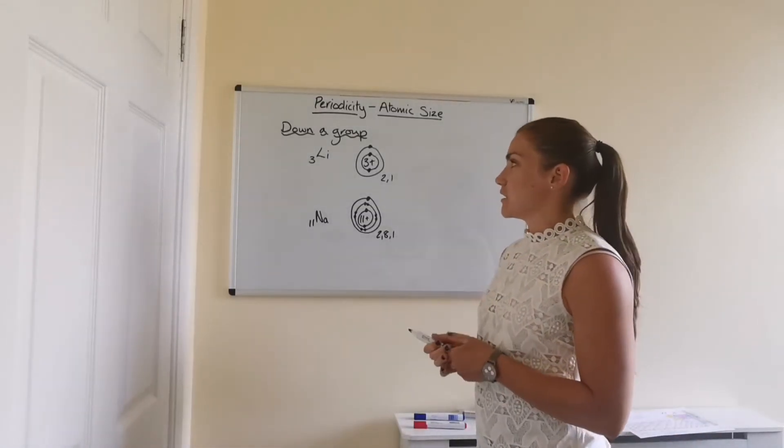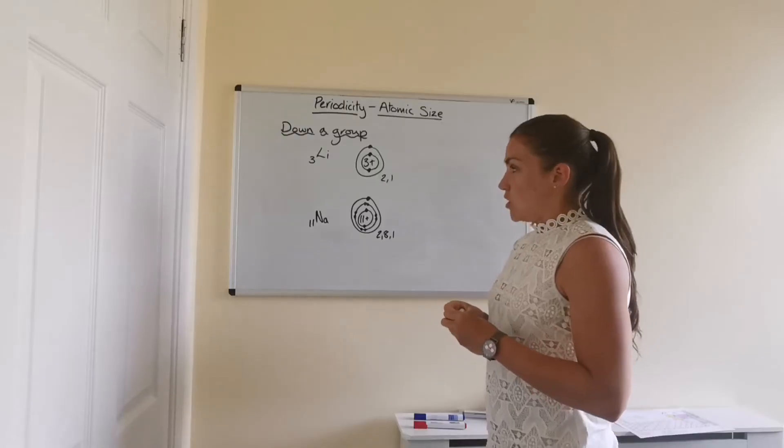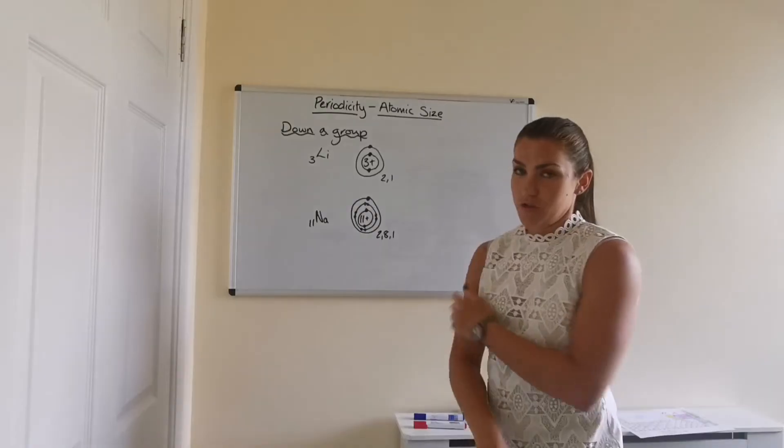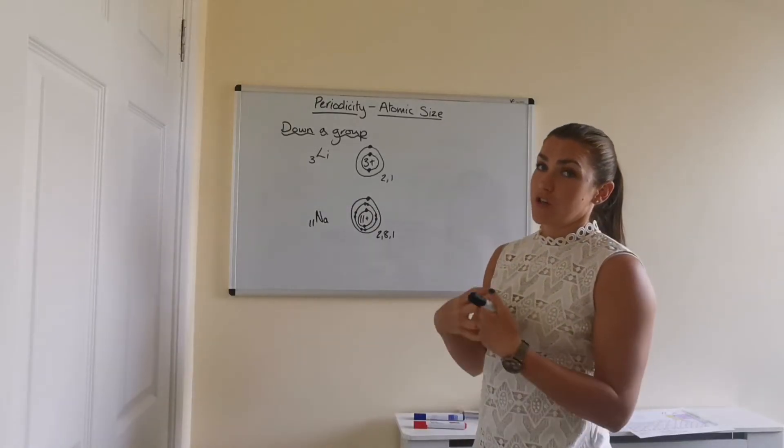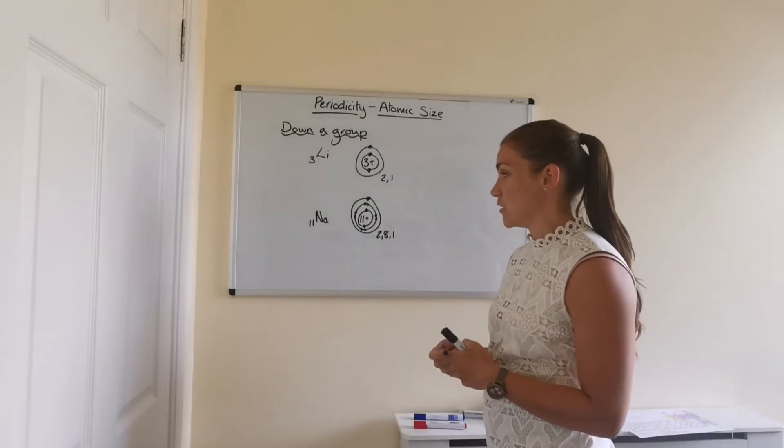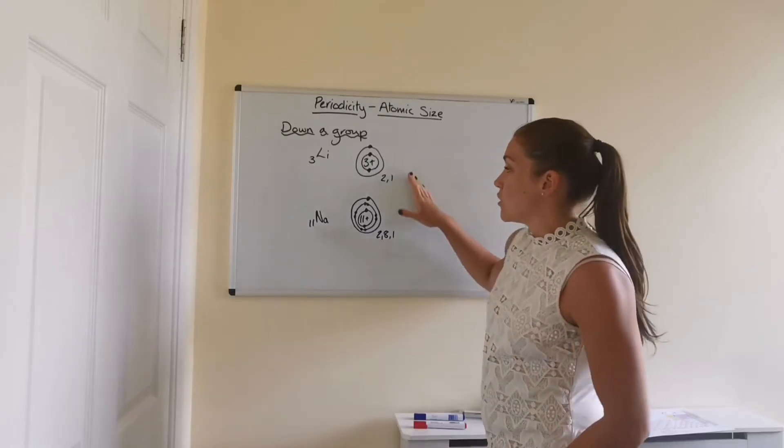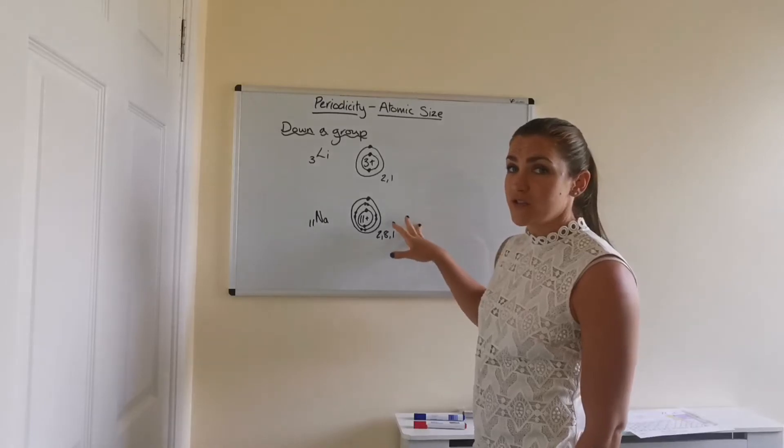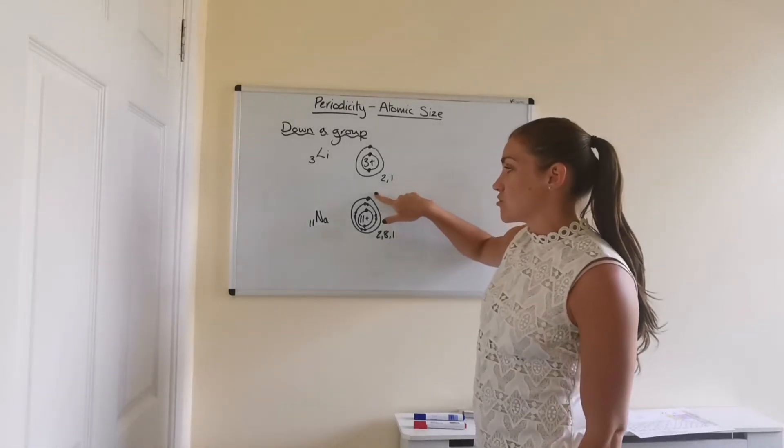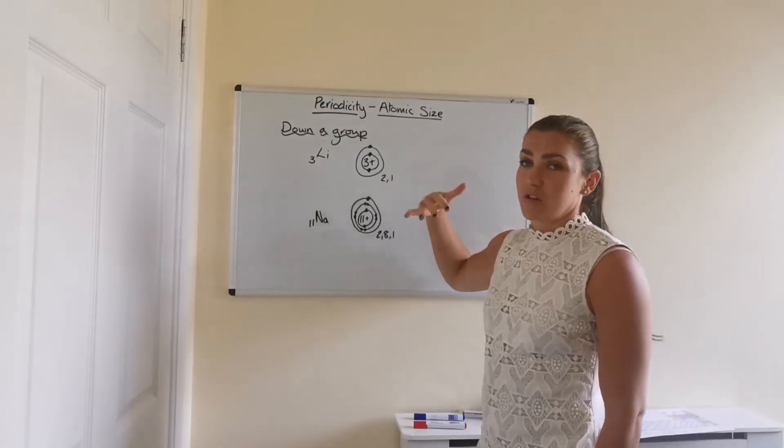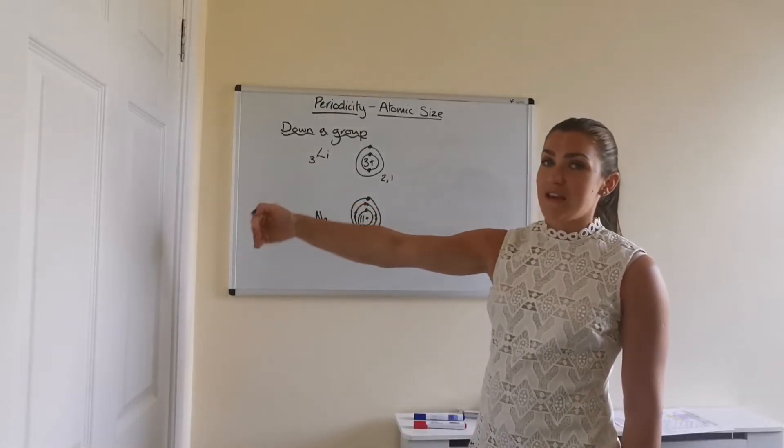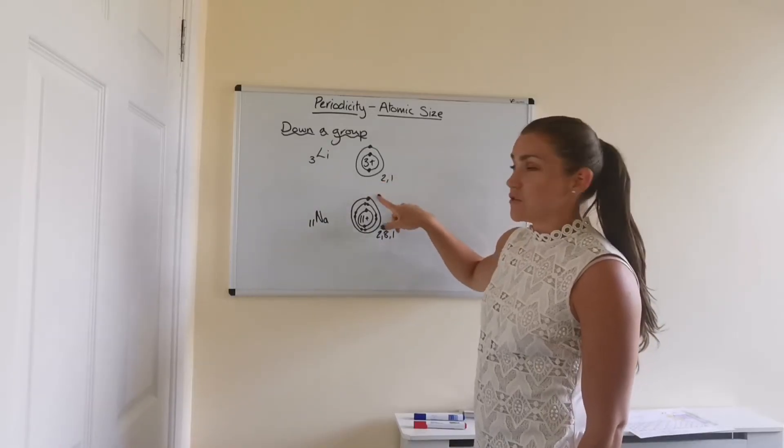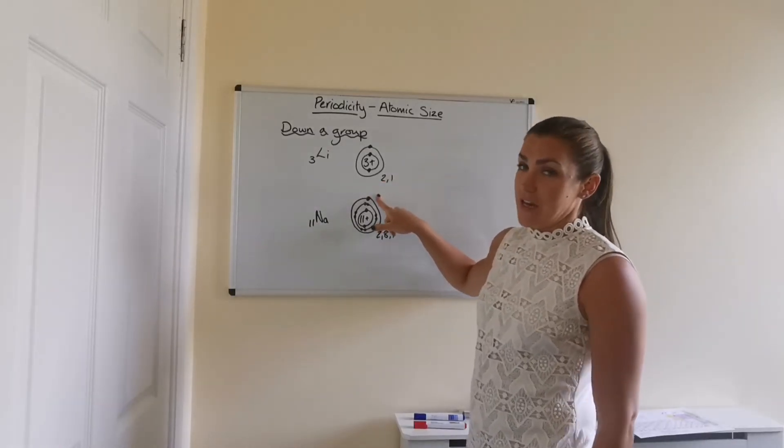Right, so if we're now comparing the size of these atoms. So sodium does have a bigger nuclear charge. So there is a bigger positive charge in the middle to pull the electrons in closer. However, because sodium actually has one extra occupied energy level compared to lithium, the outer electrons, the electrons that are actually defining the edge of the atom are further away. So because its outer electron is further from the nucleus, it's actually bigger.